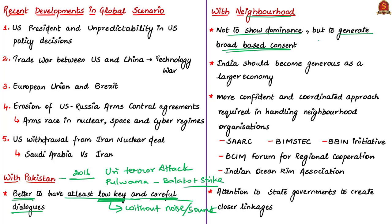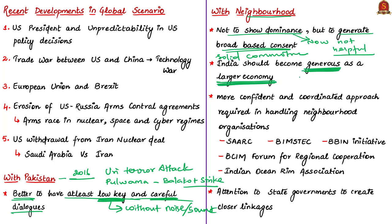Dominance and playing favorites in the region could have been helpful in a pre-globalized world where China was not asserting its power. But now, China is asserting its power in the region and globalization is a reality, so dominance and playing favorites will not work. India has to make solid action-based commitments with nations in the region and become generous as the larger economy. Neighboring countries expect this, and it will make India's support credible to them. For example, India should provide more lines of credit and financial assistance to nearby countries.